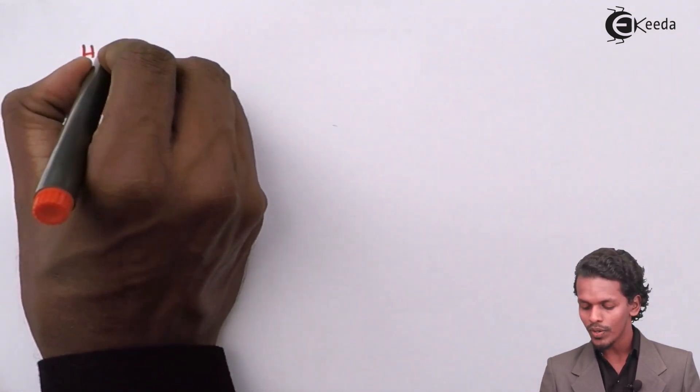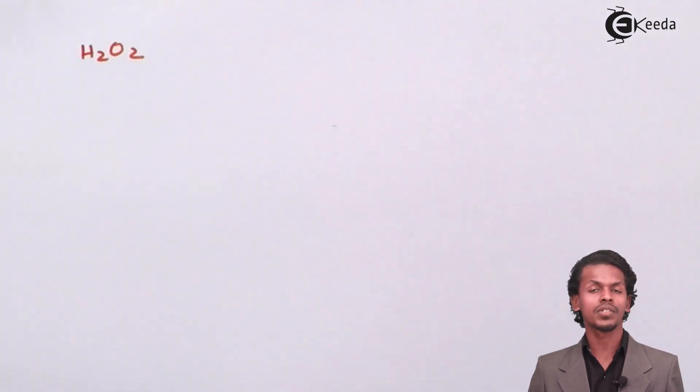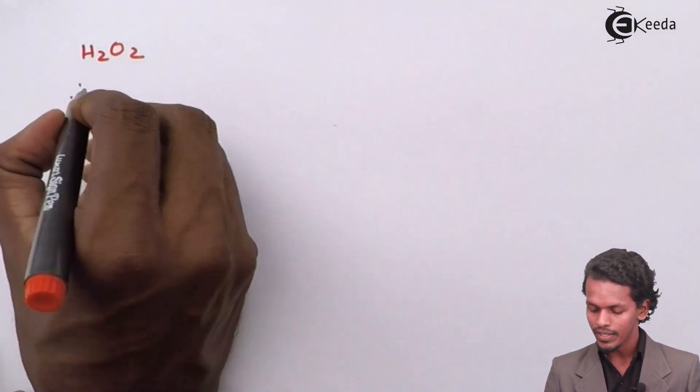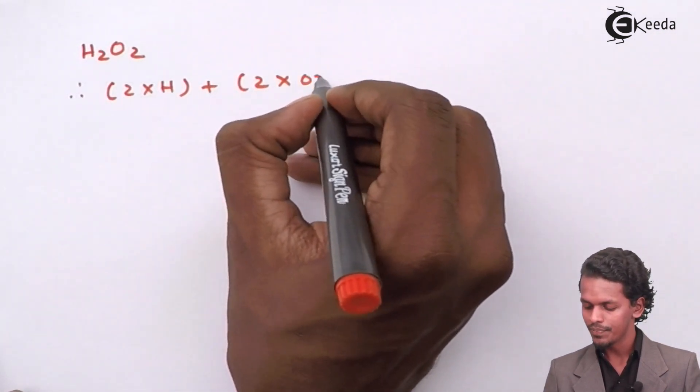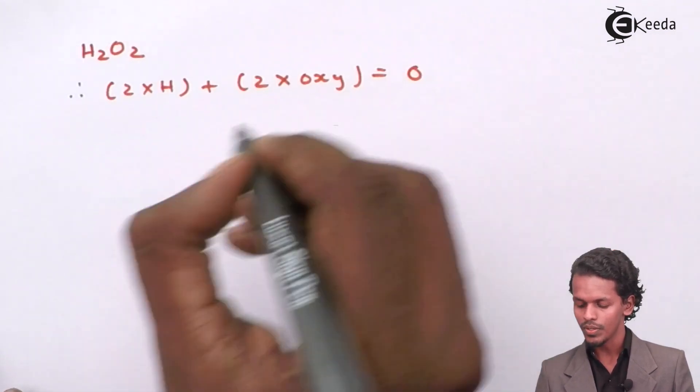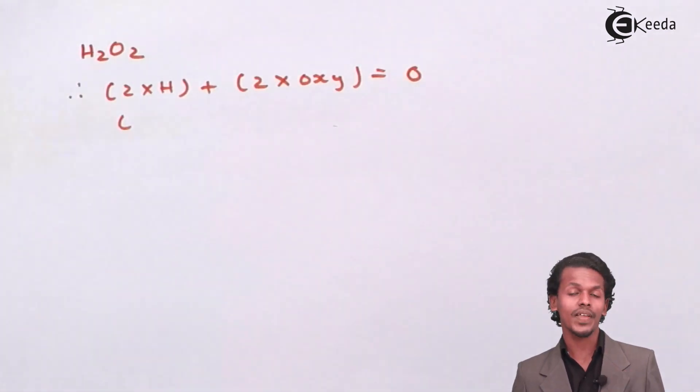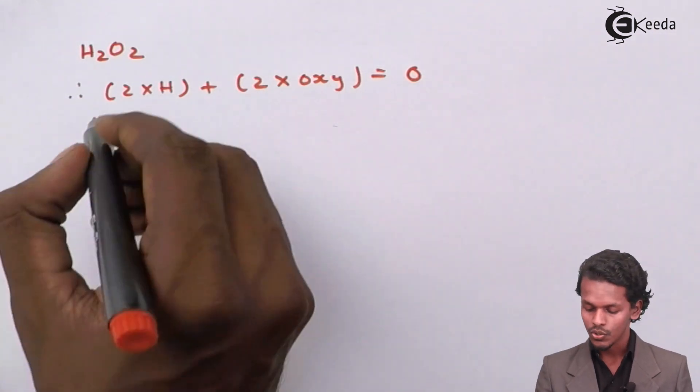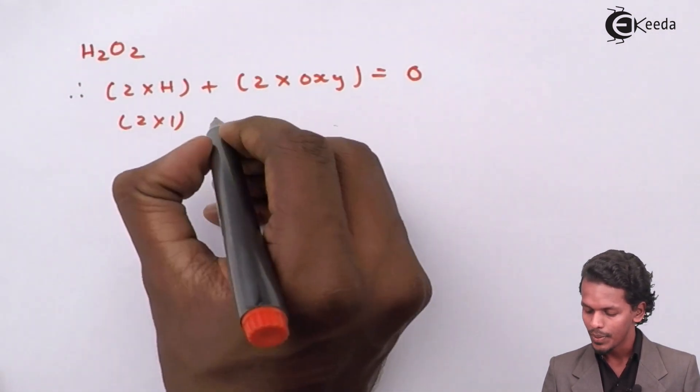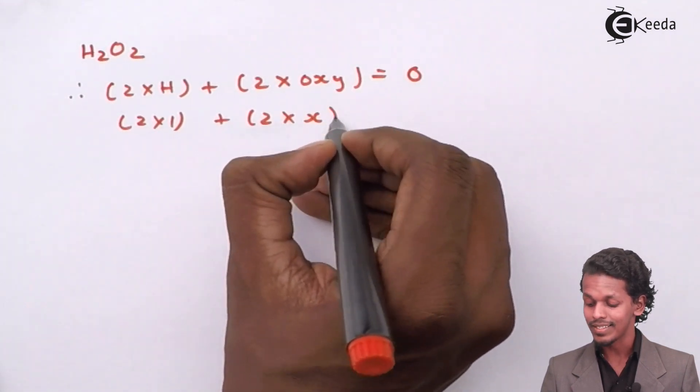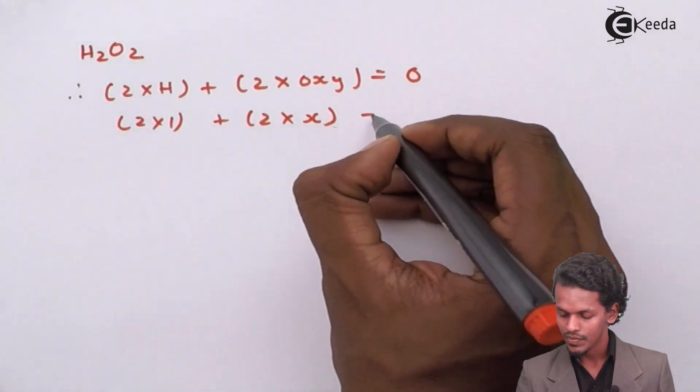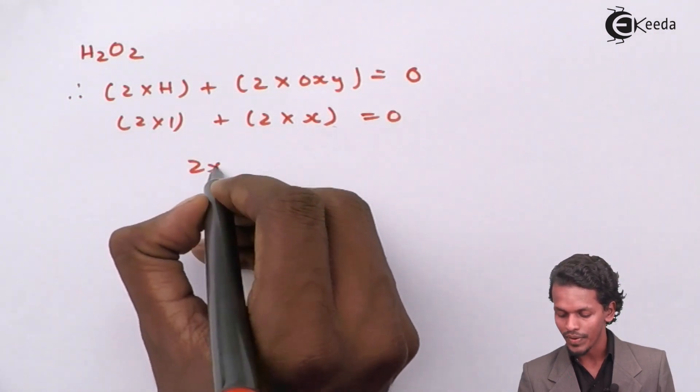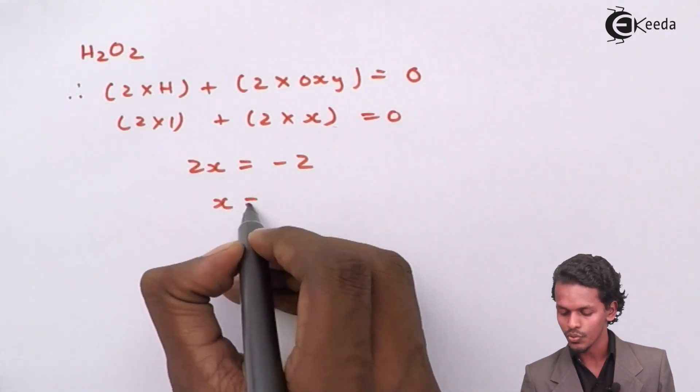If I consider the molecule H2O2 and I have to determine the oxidation number of oxygen, so this will be 2 times H plus 2 times oxygen, which is overall charge of 0. The oxidation number of hydrogen is fixed at +1. So 2 into 1 plus 2 into X equals 0, where X is the oxidation number of oxygen in peroxide. So 2X equals minus 2, therefore X equals minus 1.